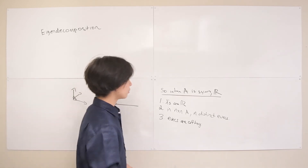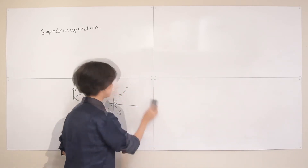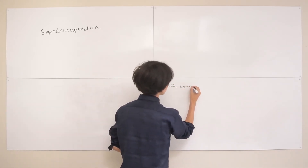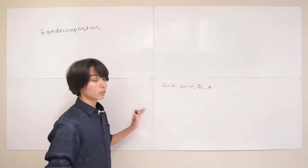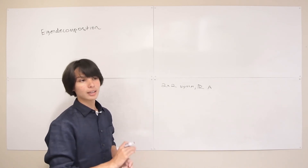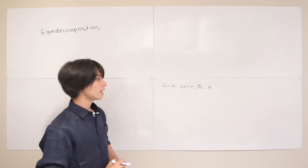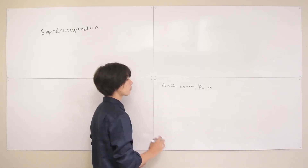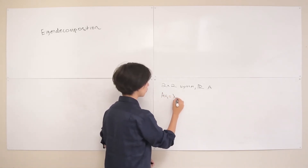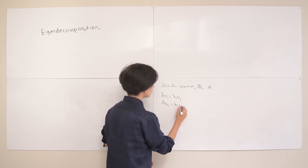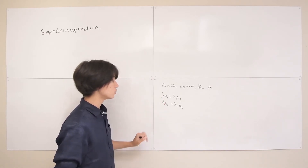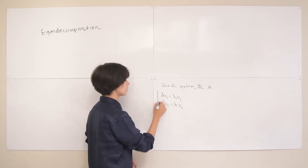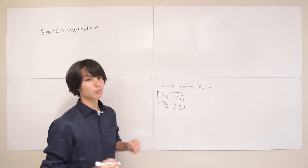Now we can begin our discussion on eigendecomposition. Let's take a two-by-two symmetric real-valued matrix A. This means it's going to have two distinct eigenvectors that are orthogonal to each other, and two eigenvalues. We can write two formulas: Av1 equals lambda1 v1, and Av2 equals lambda2 v2, which says there are two distinct vectors v1 and v2 that when transformed by A are just stretched or squished without changing direction.